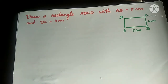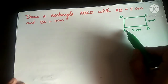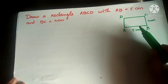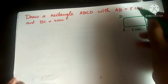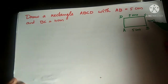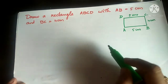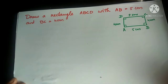The rough figure looks like this — rectangle ABCD. It is given that AB is equal to 5 cm. We know in a rectangle opposite sides are equal, so CD is also 5 cm. BC is 4 cm, so the opposite side AD is also 4 cm. All the vertices are 90 degrees.